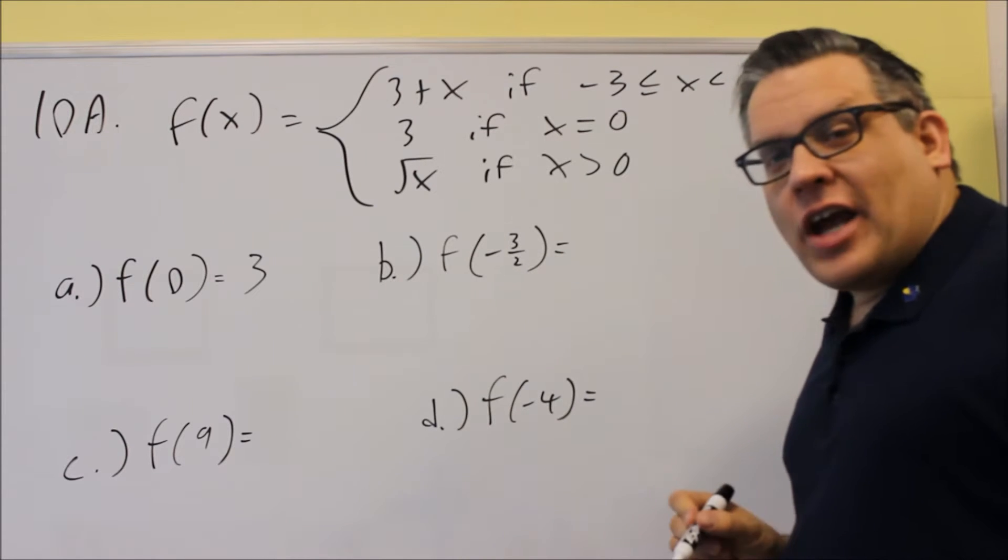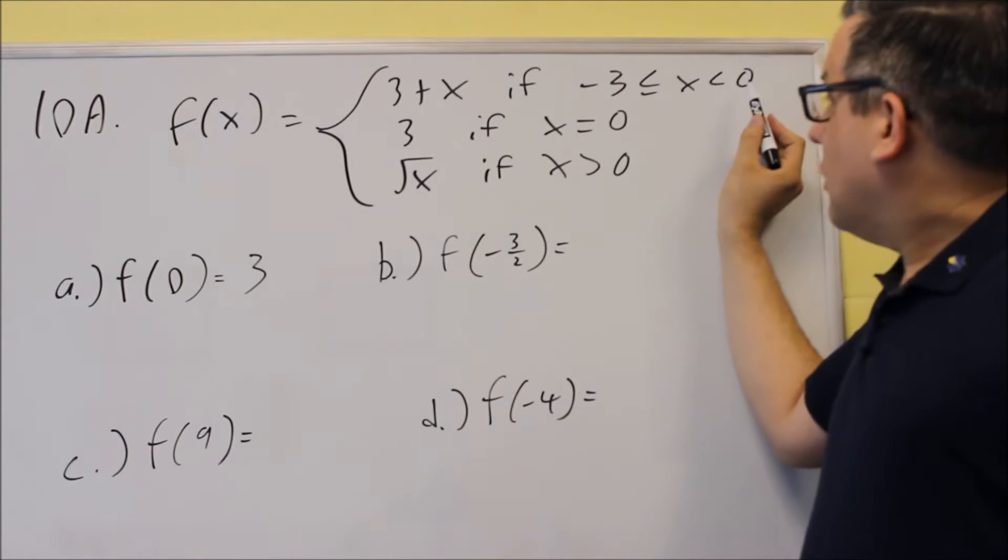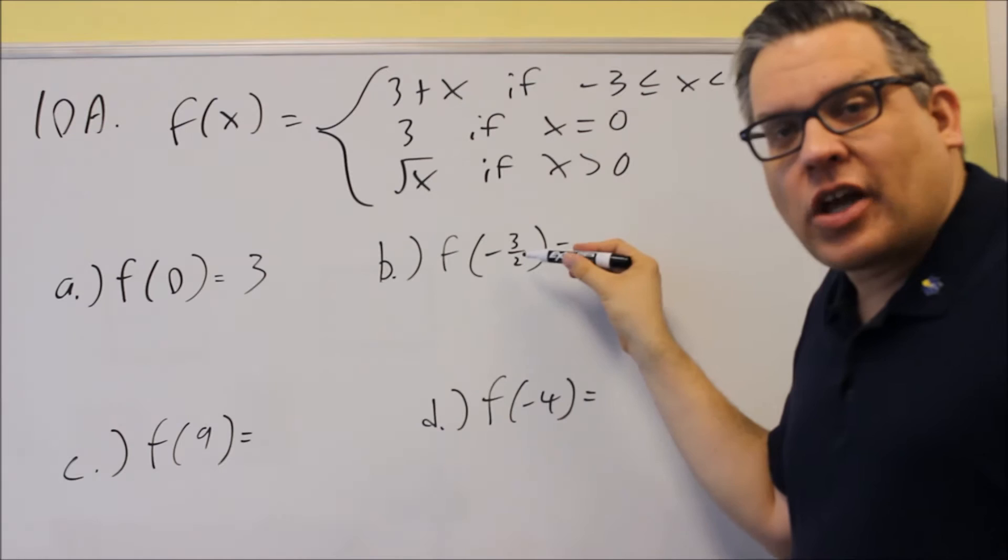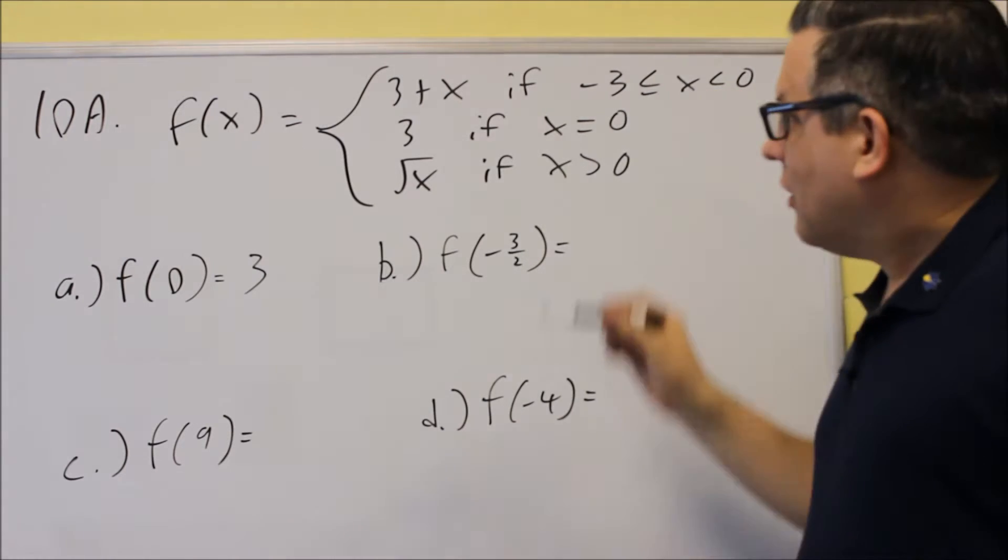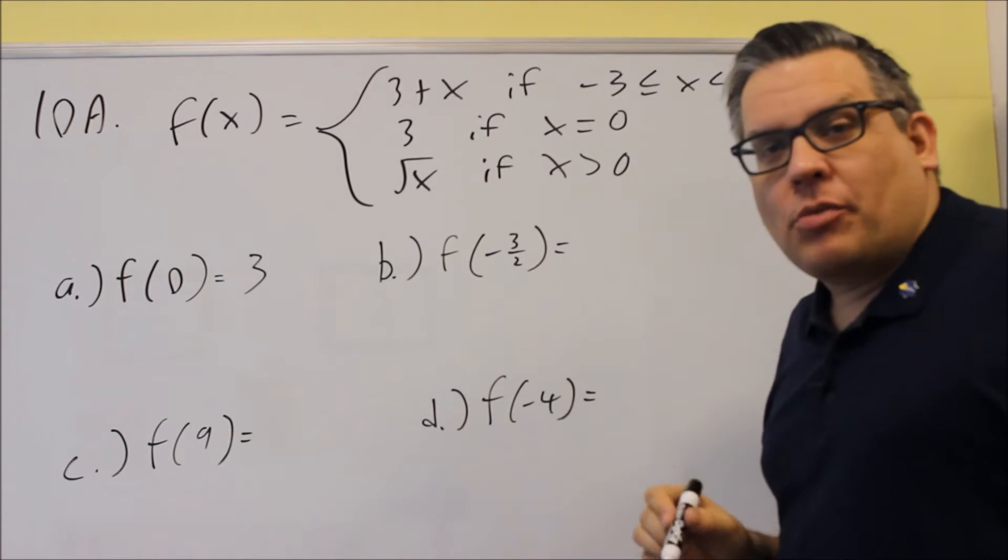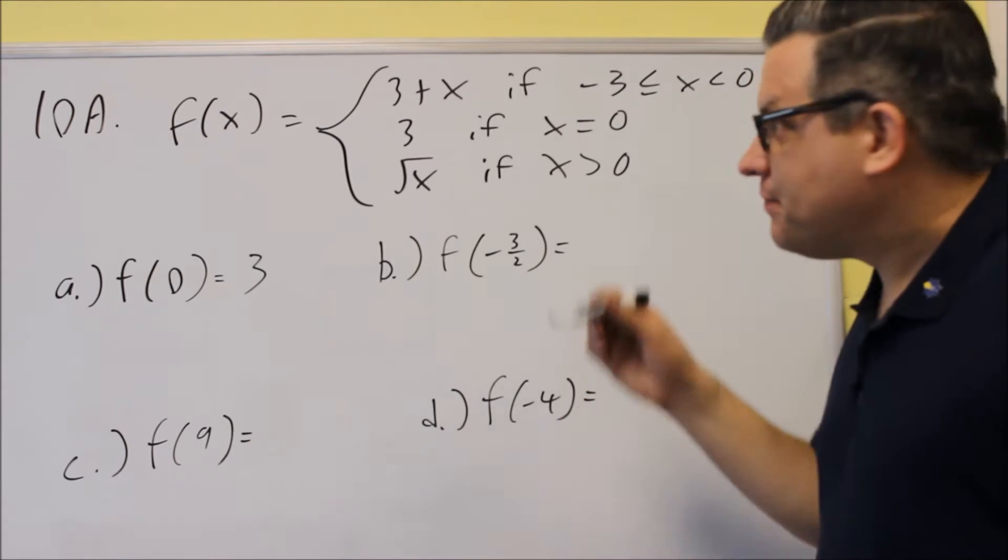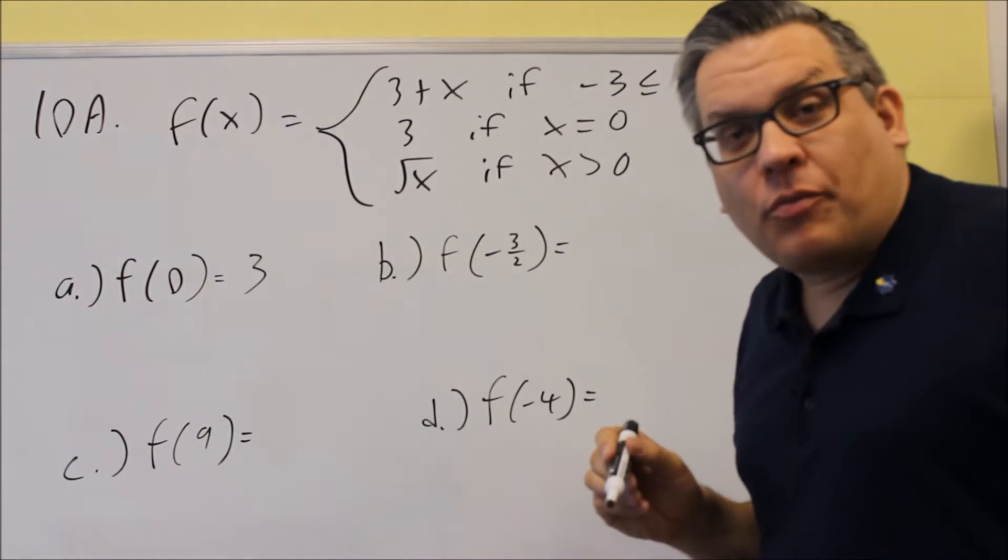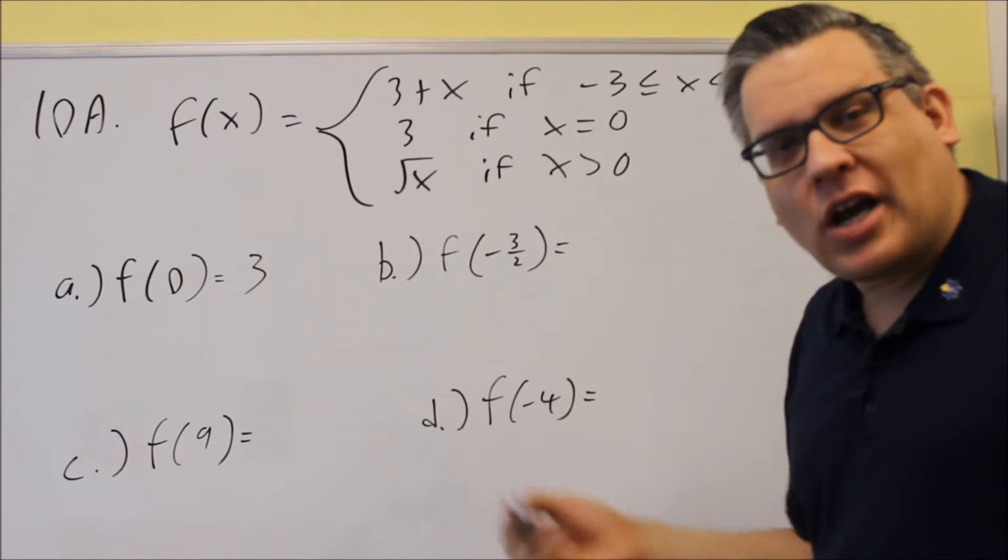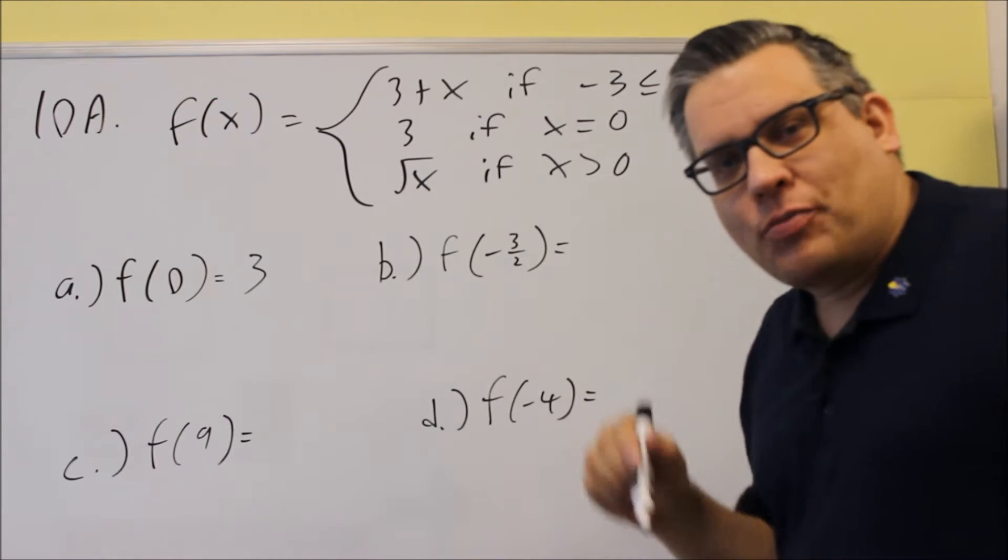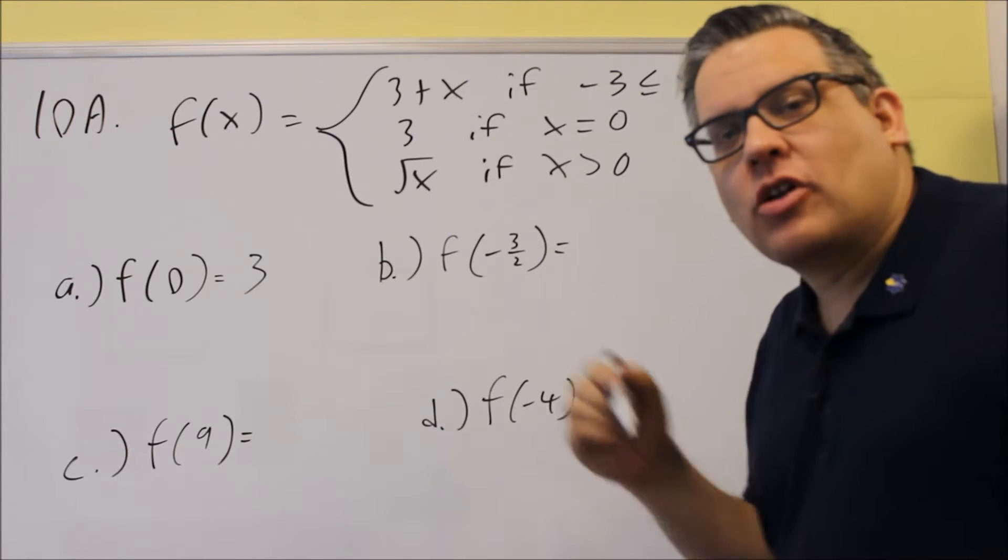Next, we're going to do f of negative 3 halves. So negative 3 halves, that would be a number between negative 3 and 0. Decimal-wise, that's negative 1.5. So that would fall in between this. So it means that it would only work for the top one. And by the way, the way this works is because it is considered a function, you're never going to have a case where you'll have two equations to put something into. Because then if you have two different equations to put something into, it's not going to be a function. So for piecewise, you will only have one equation for every single number that it will belong to.